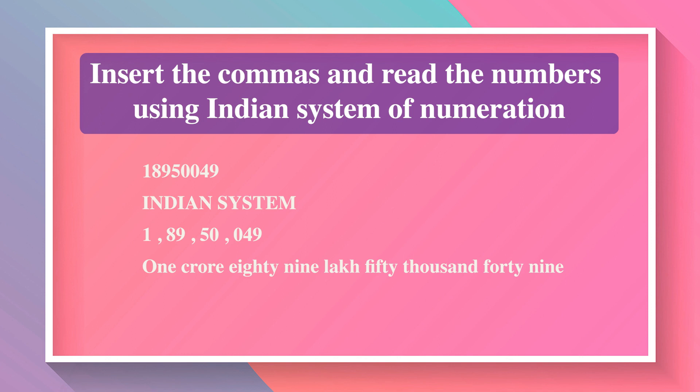The digit '1' represents the period crore, so it is read as 1 crore. '89' represents the period lakh, read as 89 lakh. '50' represents the period thousands, read as 50,000. And '049' represents the period ones, read as 49. So this number is read as 1 crore, 89 lakh, 50,049.